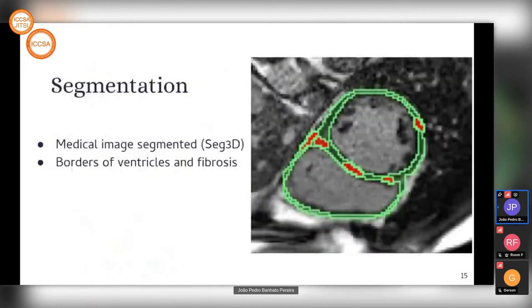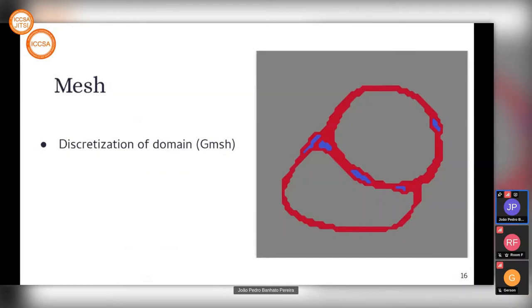With that MRI data, we did segmentation of the medical image using software called Seg3D. As you can see in the image, the borders of the ventricles, the epicardium and endocardium, are shown in green, and in red is the fibrosis of the heart. We created a mesh with that segmentation by discretizing the domain using software called Gmesh, in which each element was marked representing the absence or presence of fibrosis. The blue color represents fibrosis in the heart.